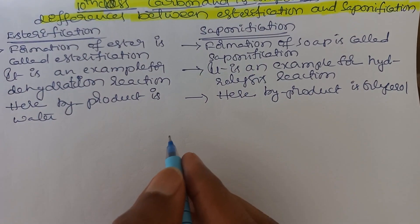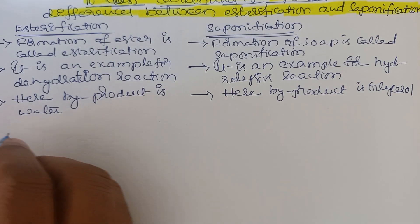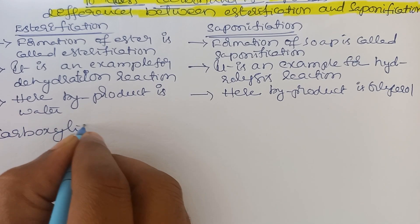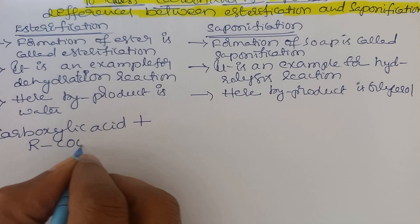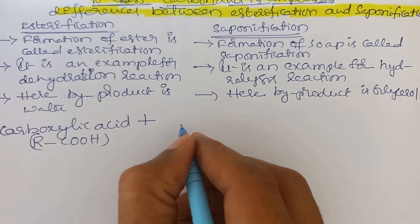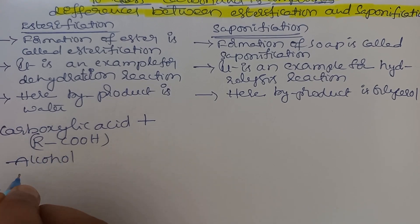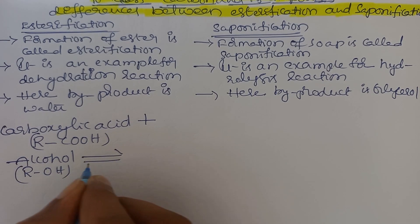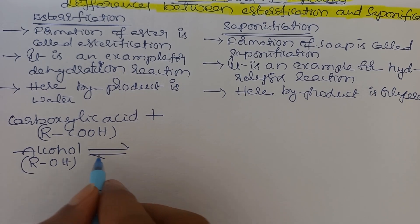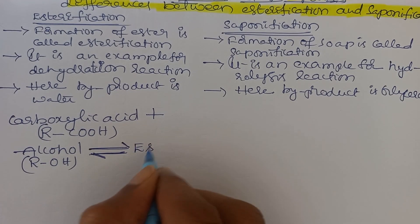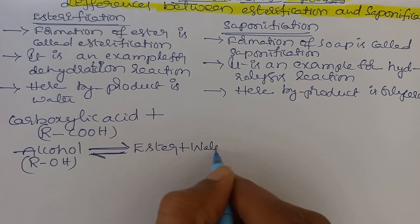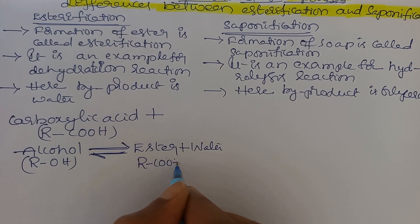The general equation for esterification: carboxylic acid (general formula R-COOH) plus alcohol (structural formula R-OH). This is a reversible reaction, which is why two arrows are written. It gives rise to ester plus water. The ester structural formula is R-COO-R'.